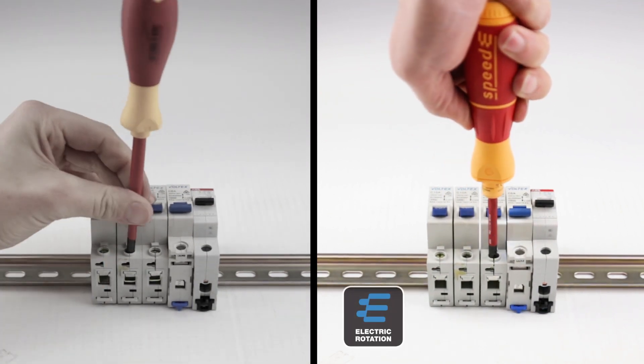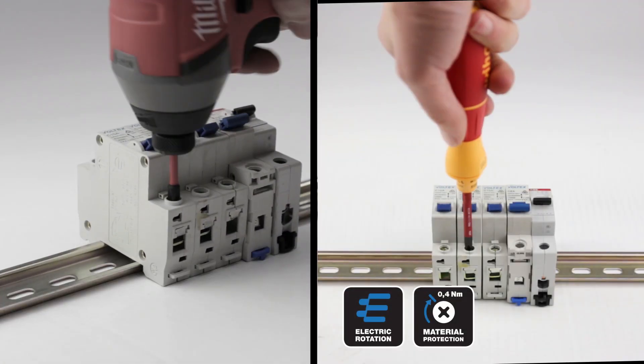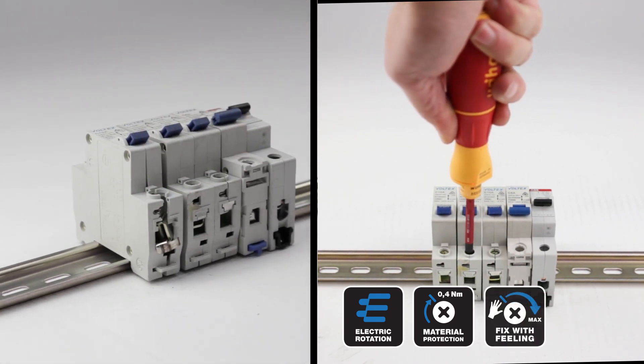One move from the Speed E gives you rapid electric tightening, automatic material protection, and in-control hand tightening to finish.